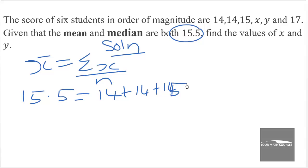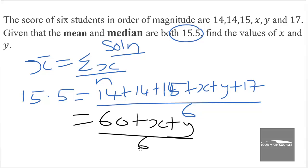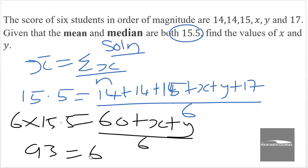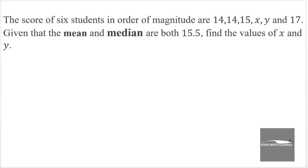When we add 14 plus 14 plus 15 plus 17 we obtain 60. Multiplying both sides by 6, we get 6 times 15.5, which equals 93. So 93 equals 60 plus X plus Y, which tells us that X plus Y equals 93 minus 60, which is 33. We can call this equation 1.